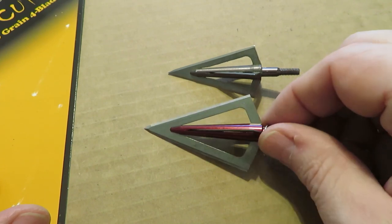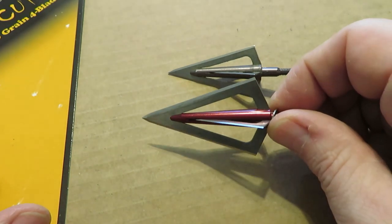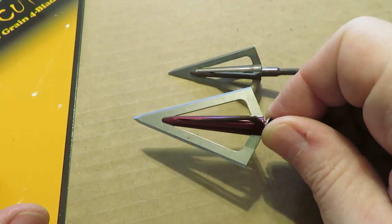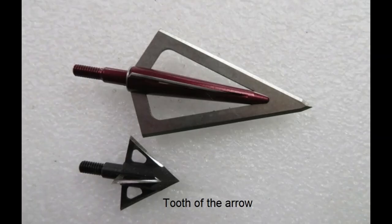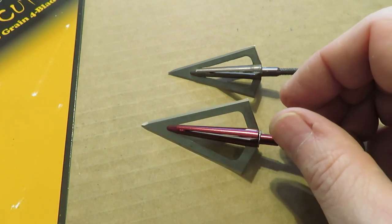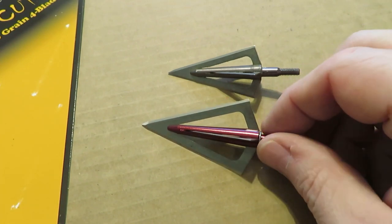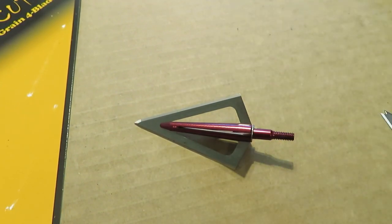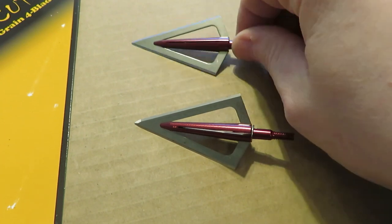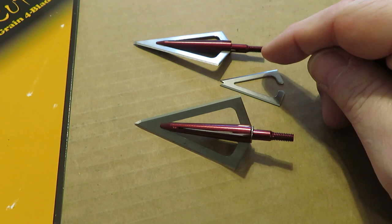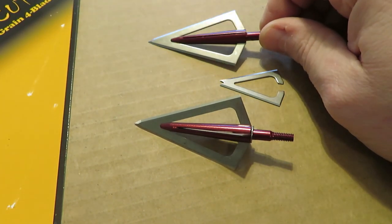For guys who shoot smaller heads like Tooth of the Arrow and Slick Trick, I'm going to put in some pictures here of how it compares to those heads. Like we do in every instance, we are going to try to figure out how to sharpen this head.